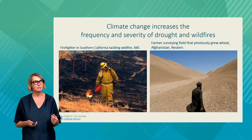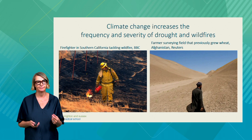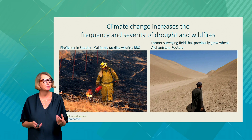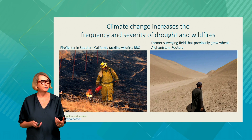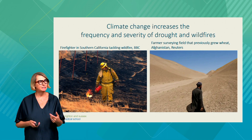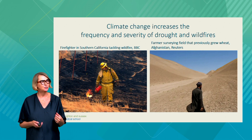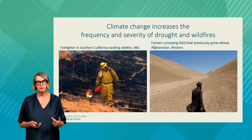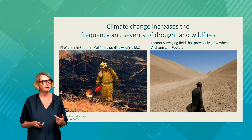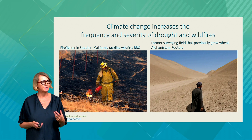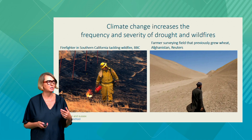Climate change is increasing the frequency and severity of drought and wildfires. On the left, this is from Southern California, where a firefighter is tackling a wildfire. Wildfires in high income countries typically have, from an acute point of view, fairly low mortality. However, the morbidity usually relates to air pollution from particulate matter, loss of infrastructure, and loss of housing. There are also huge psychological impacts, and enormous long-term impacts on people's health in terms of loss of income, possessions, and housing.